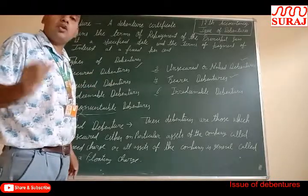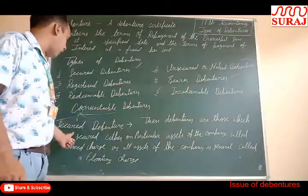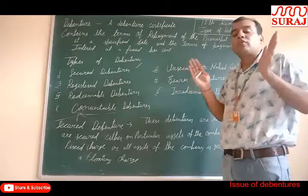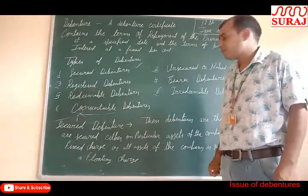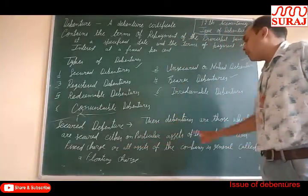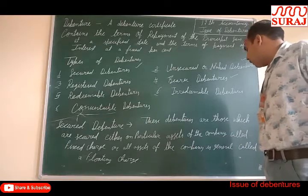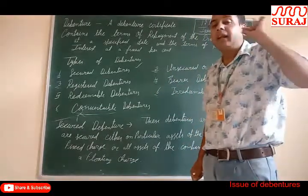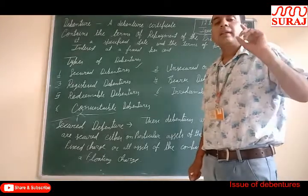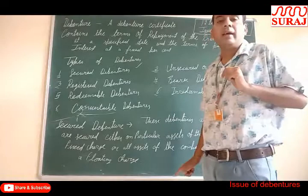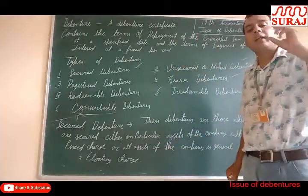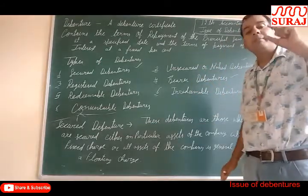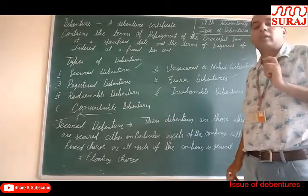Secured debenture. These debentures are those which are secured either against particular assets of the company, called a fixed charge, where some assets are kept as security, or all the assets of the company under a floating charge. It means at the time of liquidation, if the company is unable to pay, debenture holders can realize their money through these assets, because these assets are kept as security.